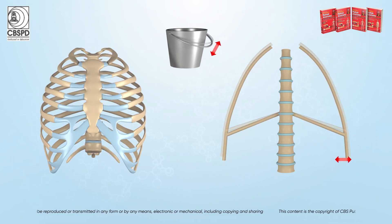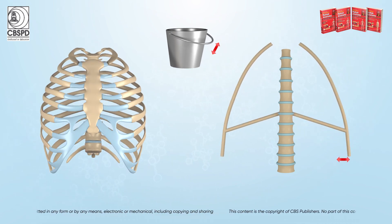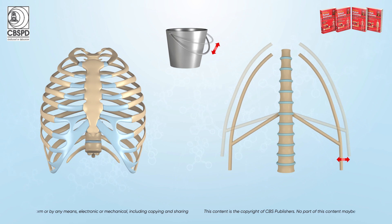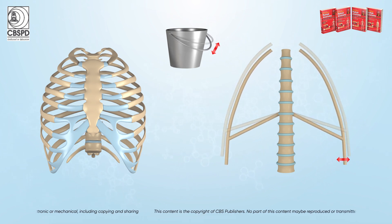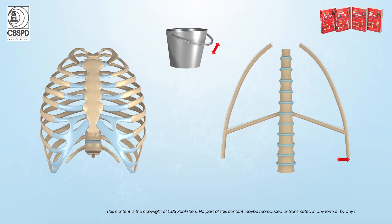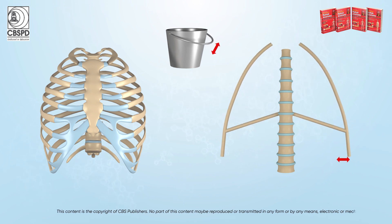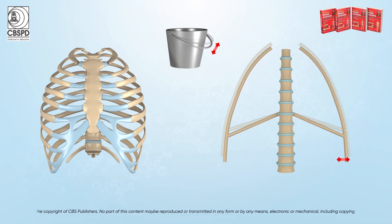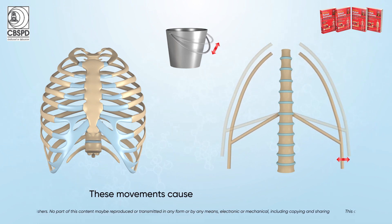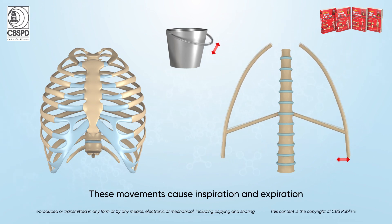These ribs glide and push laterally; the lower borders of these ribs get everted, thereby increasing the transverse diameter of the thorax. These movements cause inspiration and expiration.